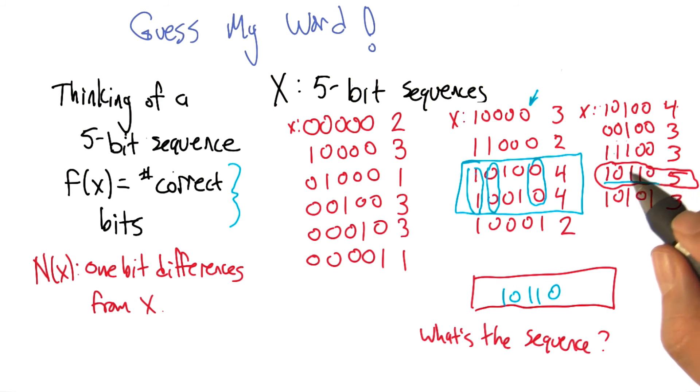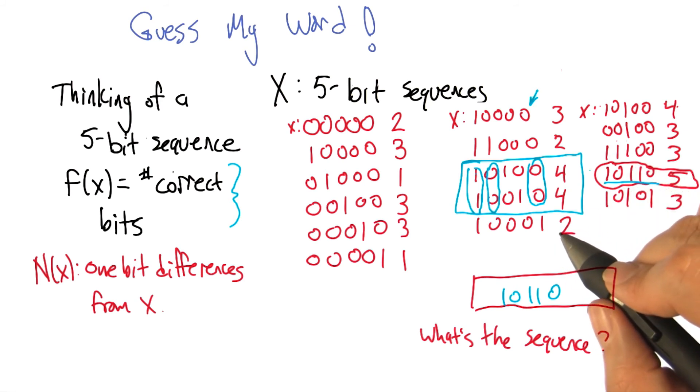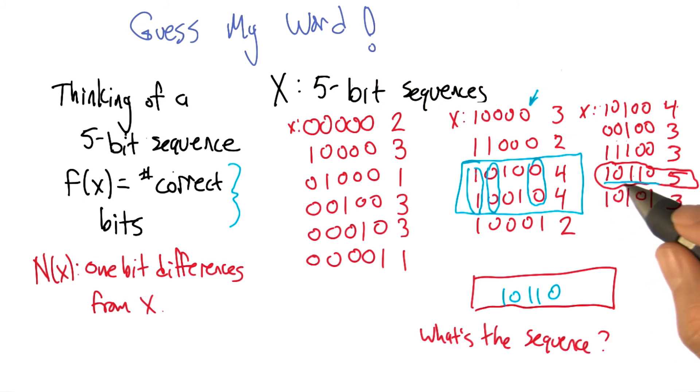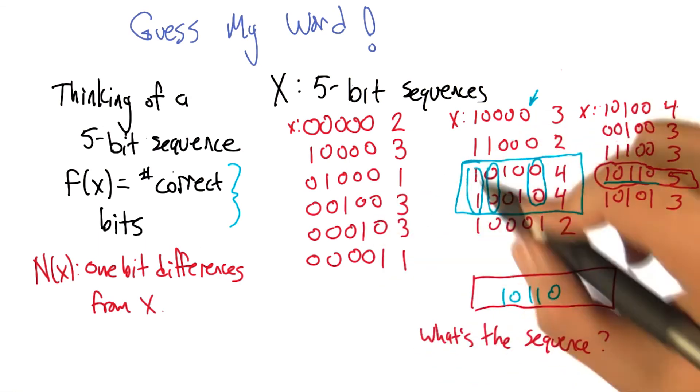Now, this particular problem is very well behaved because it has one global optimum. This bit sequence that has a score of five. Nothing else had a five. And once you're at five, no other bit sequence could you be stuck, right?